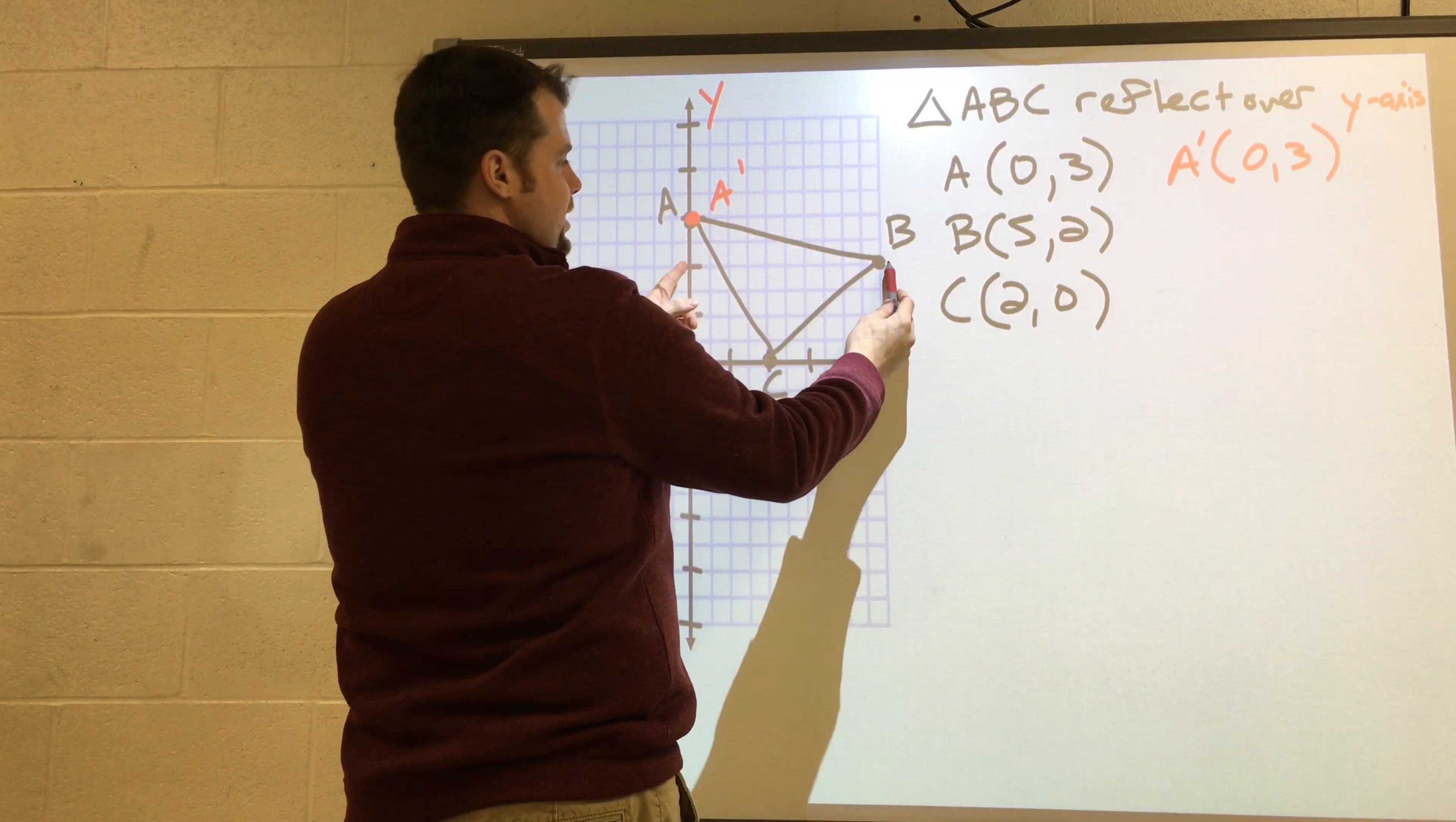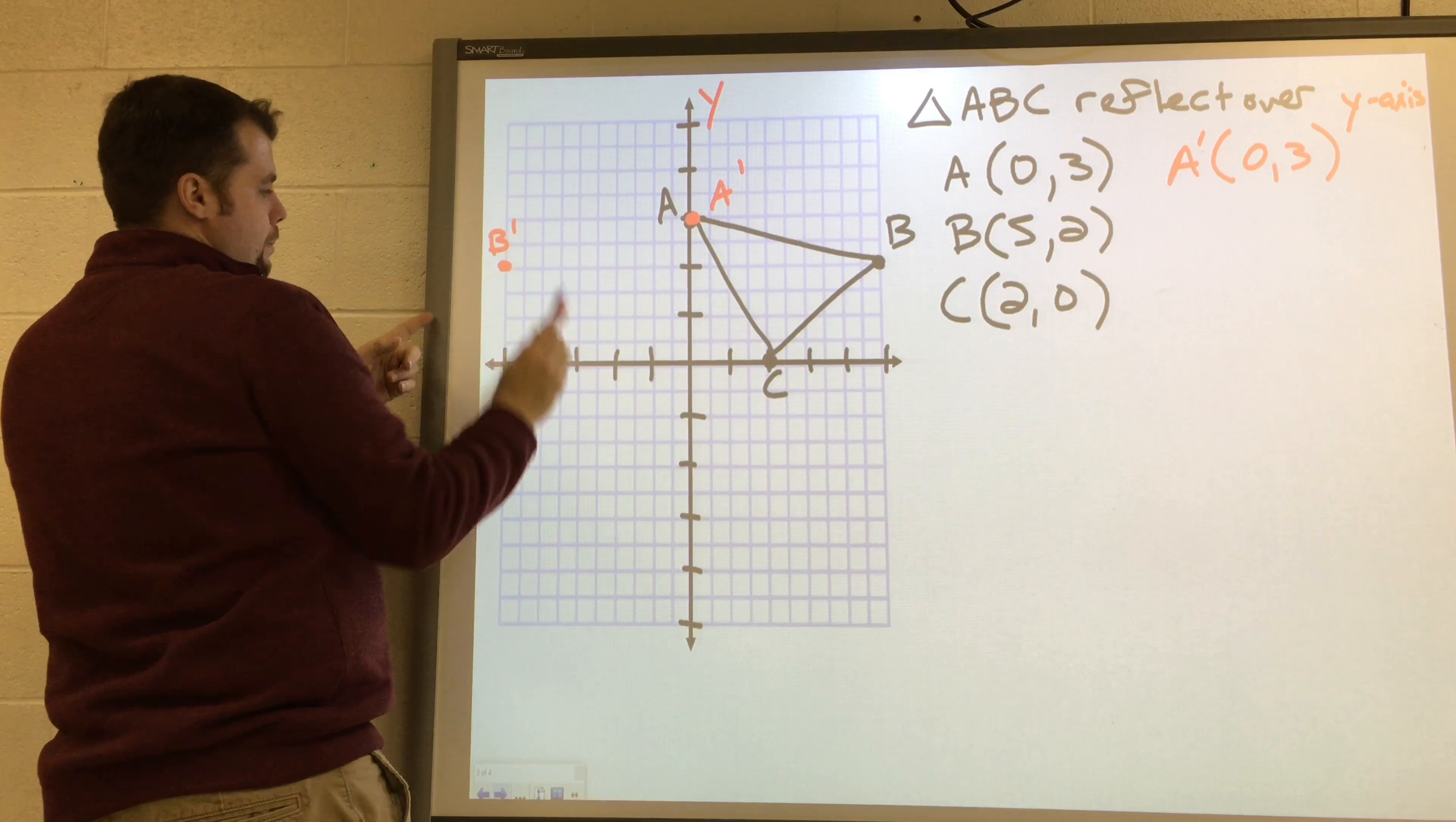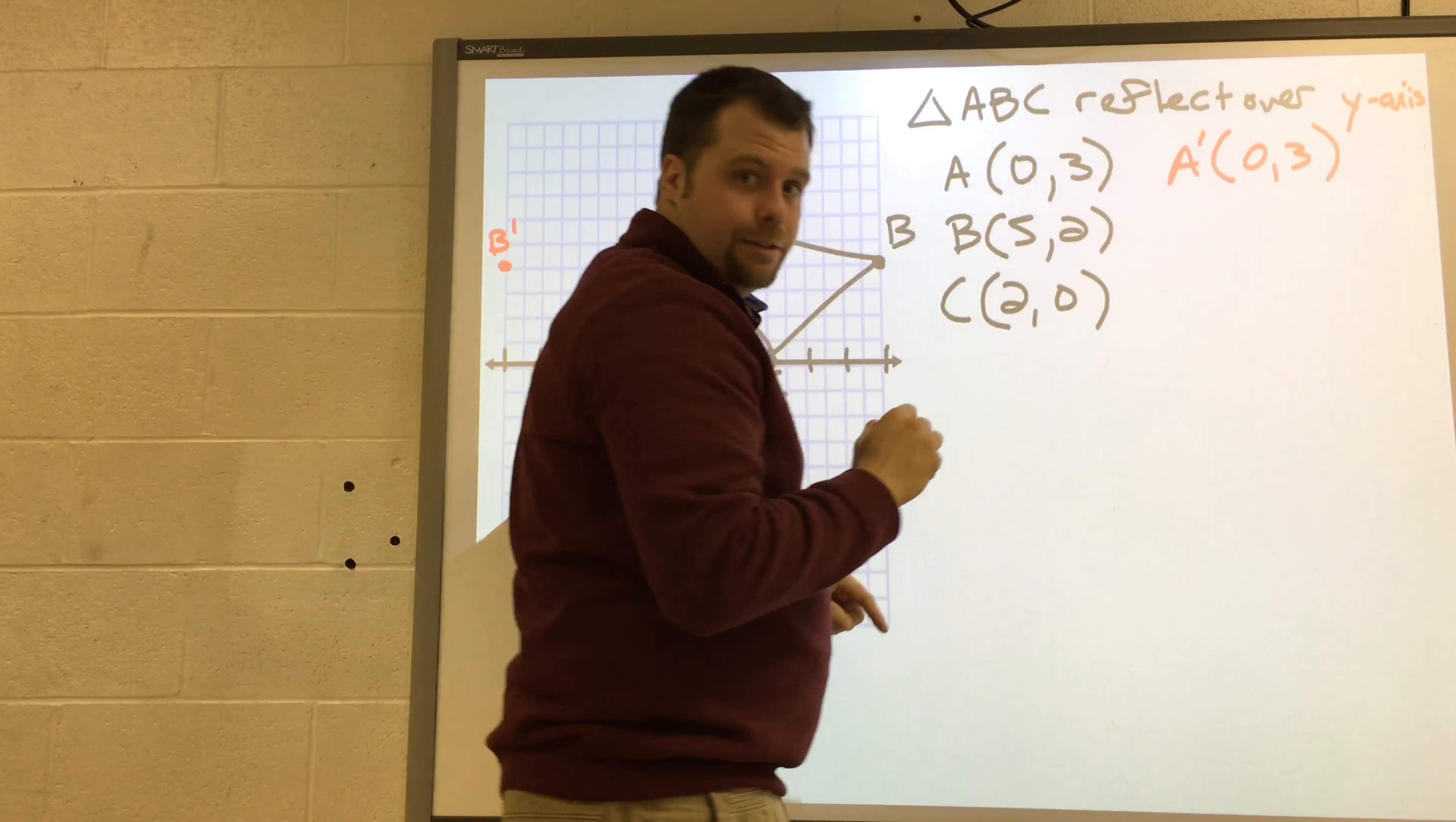B is five units on this side. So it's going to move five units across to the other side. That's B prime. And that will be the point negative five, two.